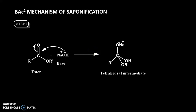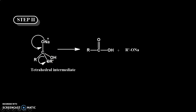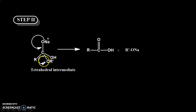In the second step, there is elimination of the alkoxide ion by acyl-O bond fission. The negative charge on the oxygen shifts, leading to removal of the alkoxide ion. There is bond fission between the carbonyl carbon and the oxygen — this is known as acyl-O bond fission. As a result, the alkoxide ion is removed, and the products formed are the carboxylic acid plus R'ONa.